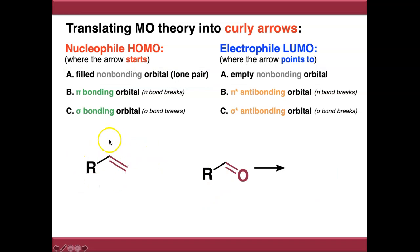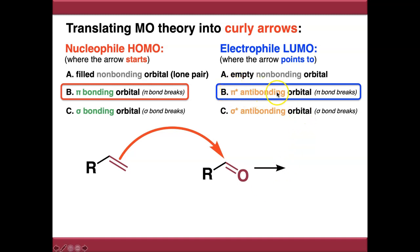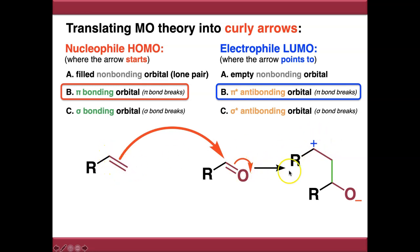Second matched example: the nucleophile has no lone pairs but does have a pi bonding orbital — that's the HOMO. The electrophile has no empty non-bonding orbital but has a pi star anti-bonding orbital — that's the LUMO. We push electrons from the pi bond onto one of the lobes of the pi star anti-bonding orbital. Because we're filling the pi star, we break the pi bond and shove those electrons onto the next atom along. The product has a new sigma bond between nucleophile and electrophile. One carbon is now electron deficient, and the oxygen has gained the pi bond electrons — it's now electron rich.